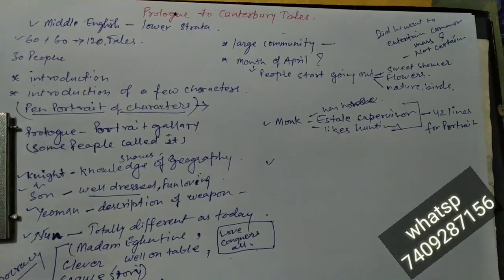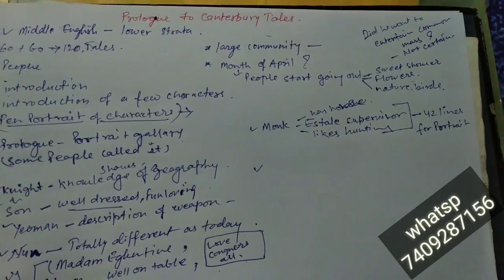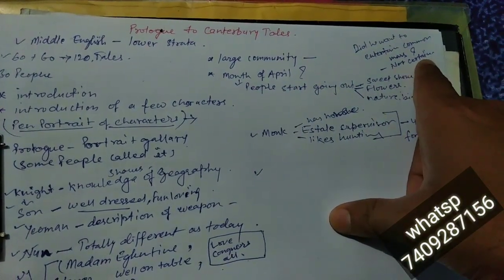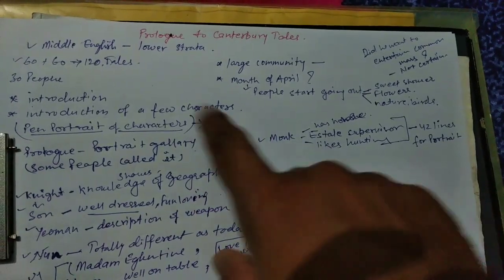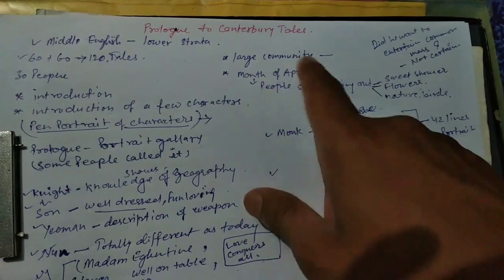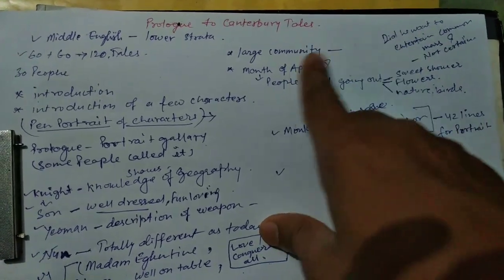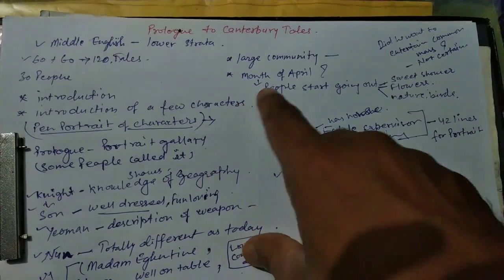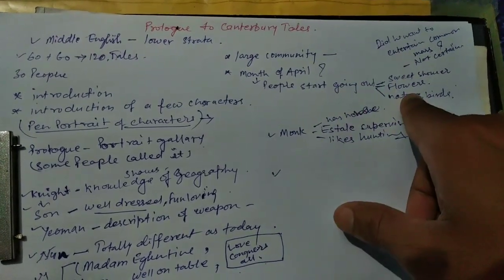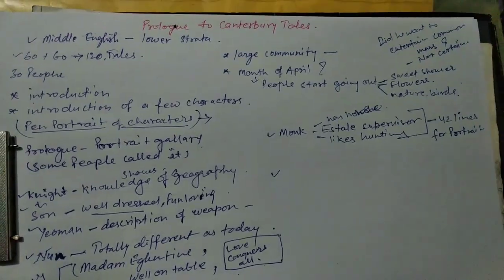The next thing is: did Chaucer want to entertain the common masses? There was a question about the Prologue to Canterbury Tales. Nobody is certain about the answer — whether he wanted to entertain — because we know about Chaucer that he was a man of business, going here and there, and he was a political person as well. But this work did a great job entertaining a large community. He chose the month of April because in Britain it is a good time to go out due to the sweet showers, the blushing of flowers, nature, and birds.